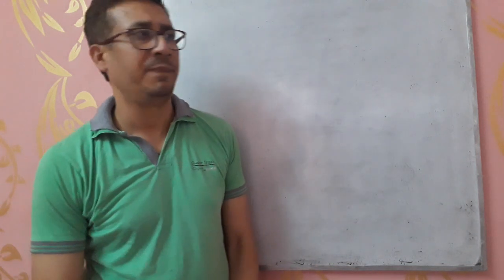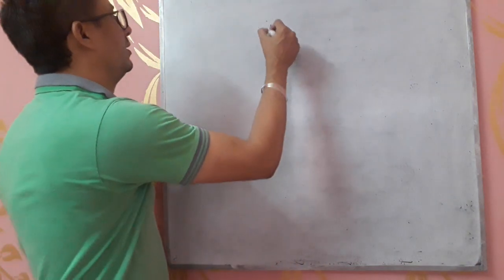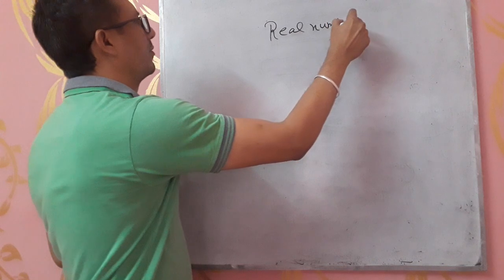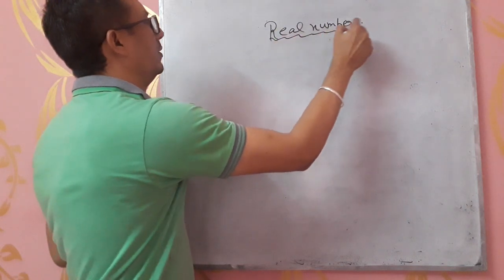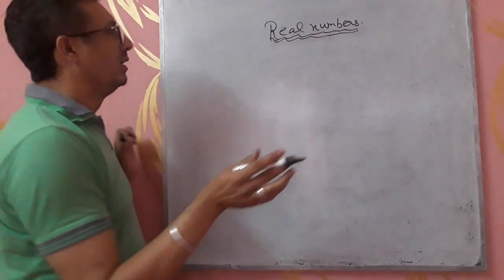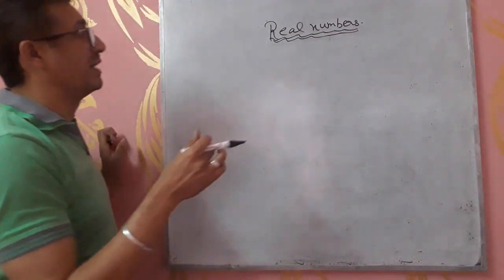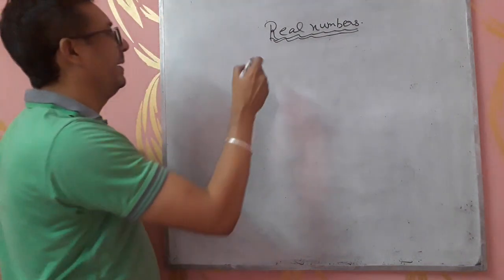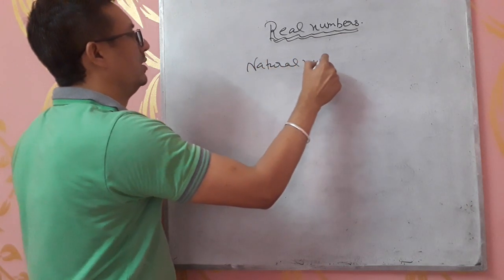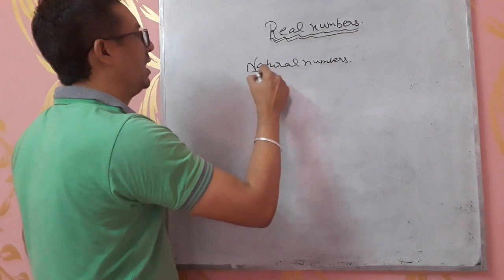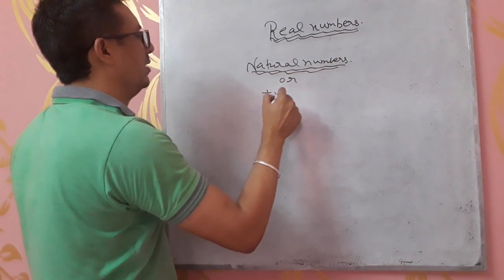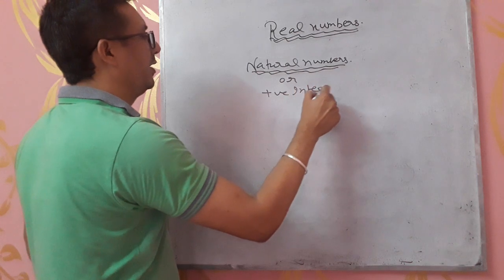I hope you will understand it. We have real numbers — what are real numbers? We will recall the concept from the previous class. First of all, we should know what are natural numbers. Natural numbers are all counting numbers. Another name for them is positive integers.